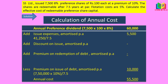Now we amortize the issue expenses per annum by dividing by 7.5 redemption years, giving us 5,500 as the issue expenses. We don't have discount on issue or premium on redemption, but we have premium on issue, so we subtract that. The premium is 10%, calculated on face value as 75,000, divided by 7.5 years, giving 10,000 as the premium on issue. So the annual cost is 55,500.